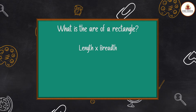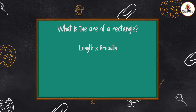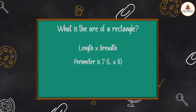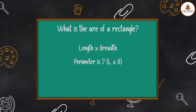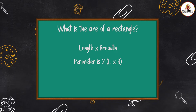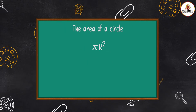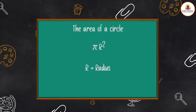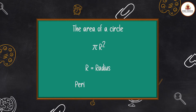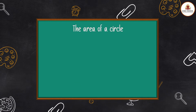...length times breadth, and the perimeter is 2 × (L + B). The area of a circle is πr², where r is the radius, and the perimeter of a circle is 2πr.